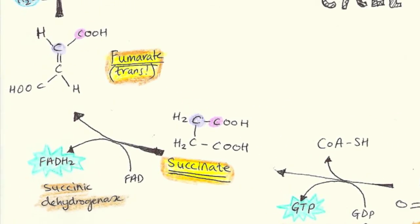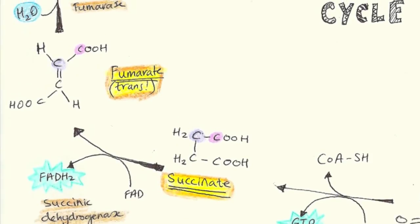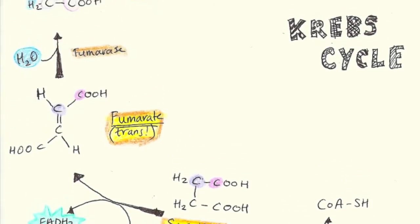Succinate dehydrogenase removes hydrogens from succinate. This creates a double bond between carbons 2 and 3. In this process, FAD+ is reduced to FADH2. The trans-stereoisomer of fumarate is formed.